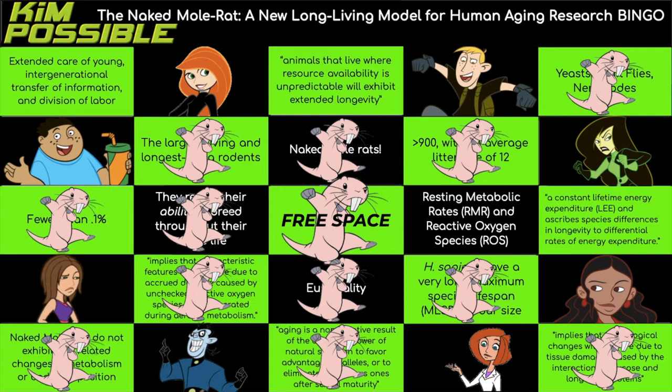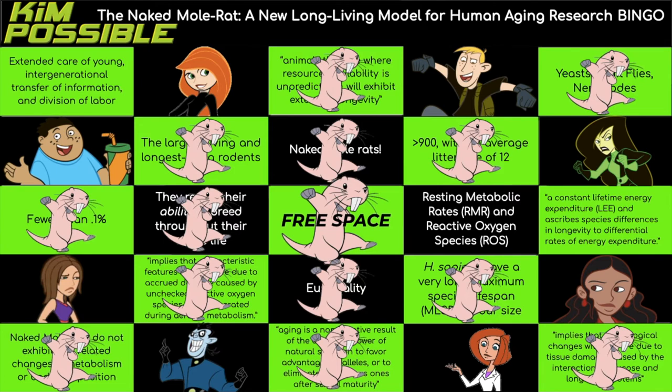What is environmentally selected lifespan theory? This theory says that animals that live where resource availability is unpredictable will exhibit extended longevity, which is very interesting and really not what you would expect. When I think of that, I think of a cactus — in the desert, you don't know when your next source of water will be accessible, but cacti still live for a really long time.